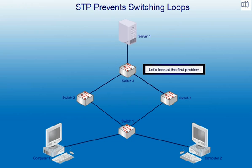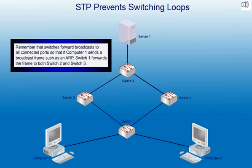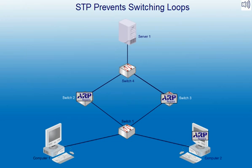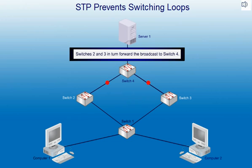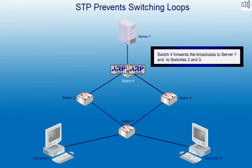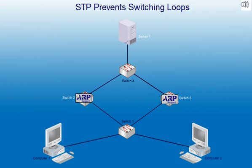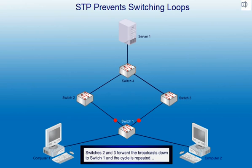Let's look at the first problem. Remember that switches forward broadcasts to all connected ports, so if Computer 1 sends a broadcast frame such as an ARP, Switch 1 forwards the frame to both Switch 2 and Switch 3. Switches 2 and 3 in turn forward the broadcast to Switch 4. Switch 4 forwards the broadcast to Server 1 and back to Switches 2 and 3. Switches 2 and 3 forward the broadcast down to Switch 1, and the cycle is repeated.